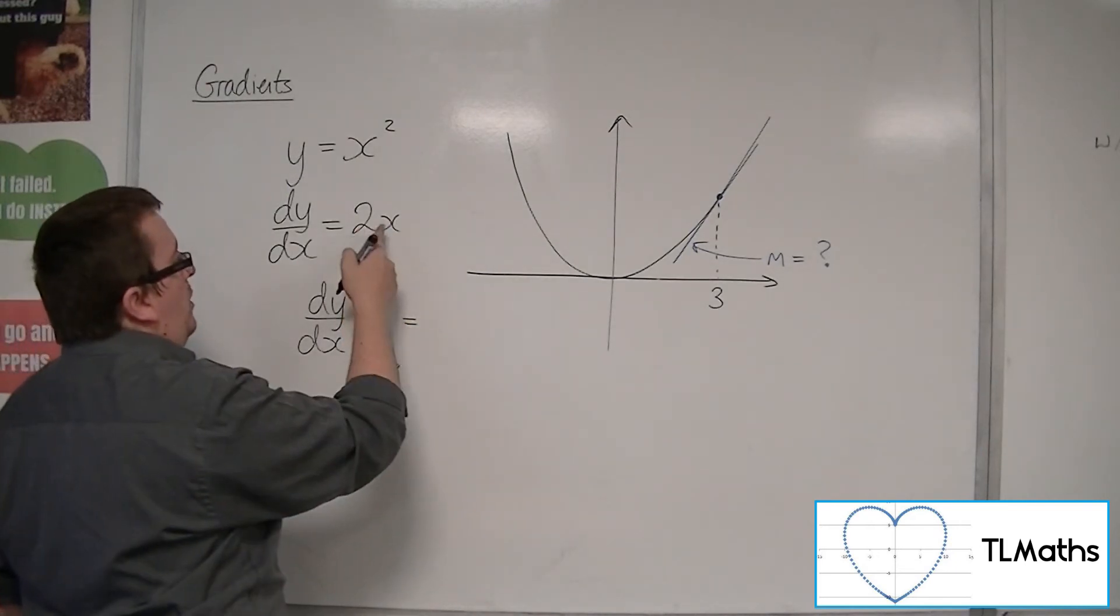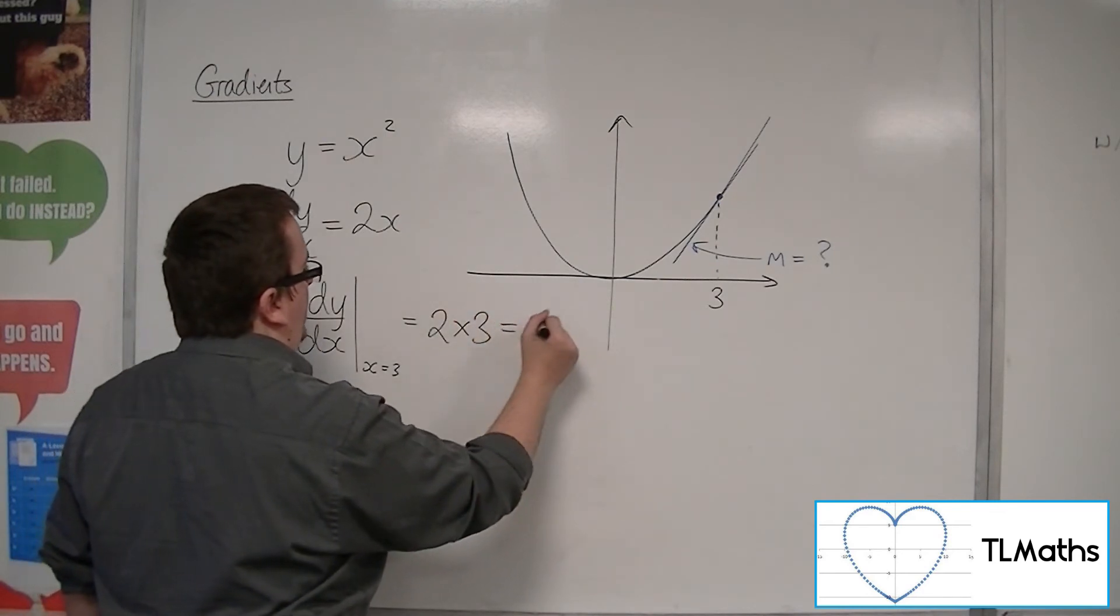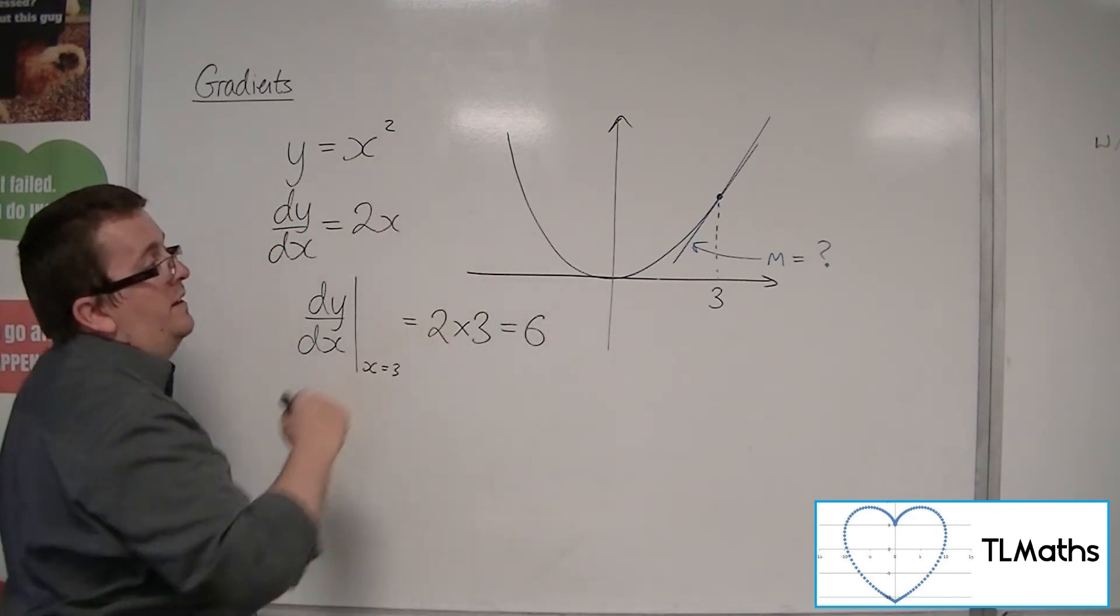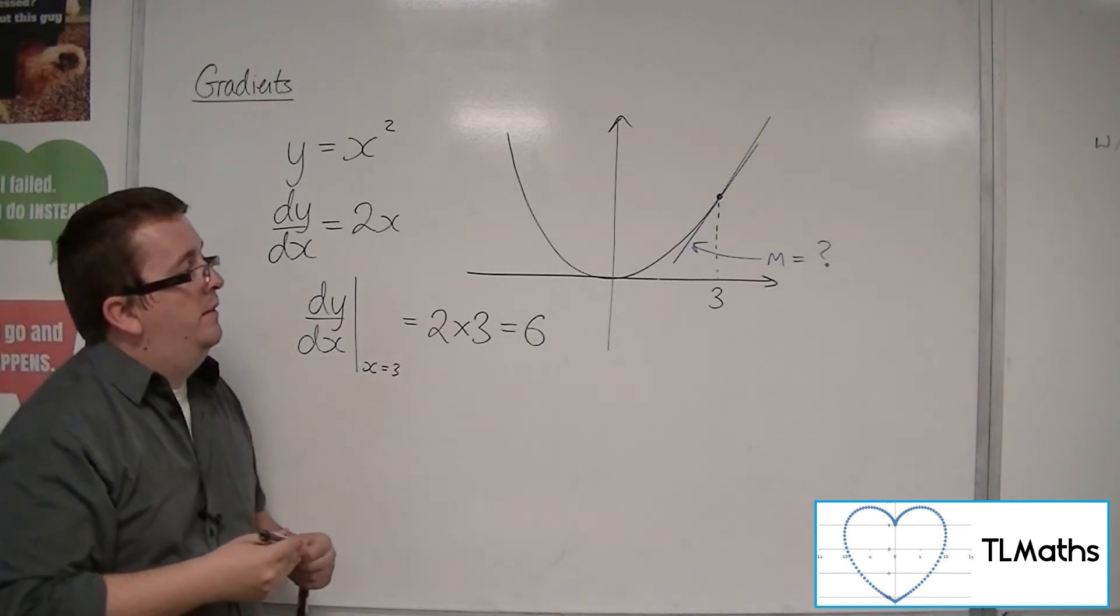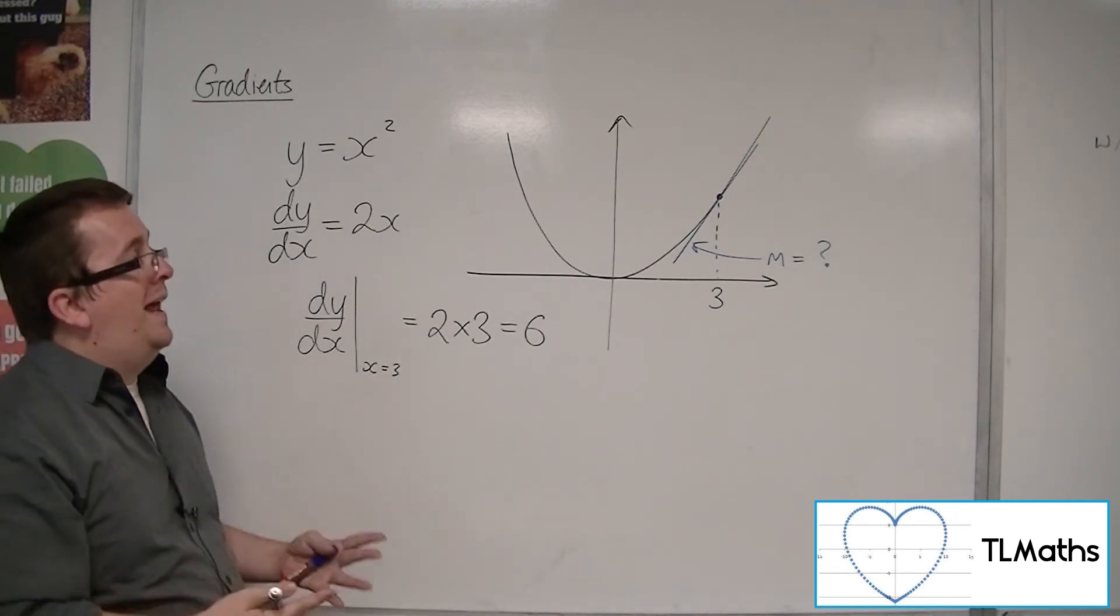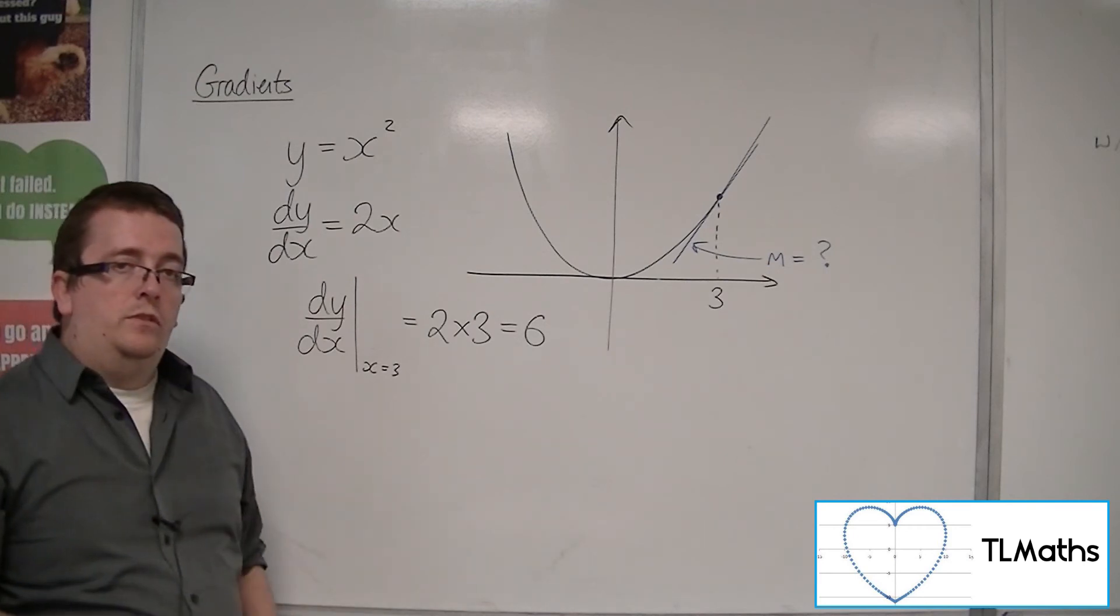So 2 lots of 3, which is 6. So the gradient of that blue tangent line is 6. That's the gradient of that line at that point.